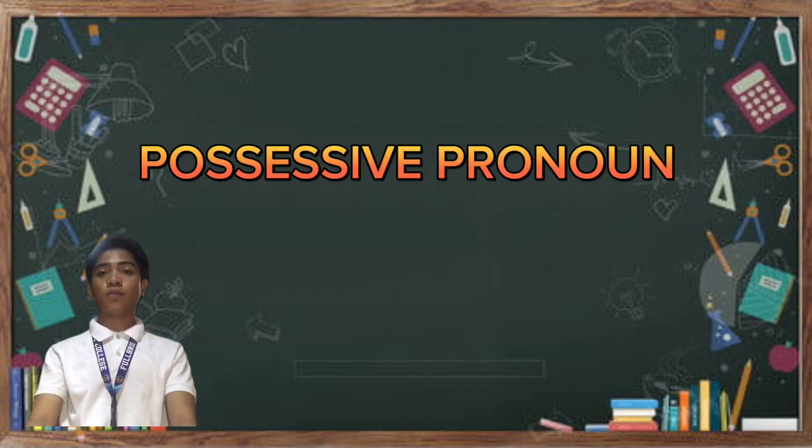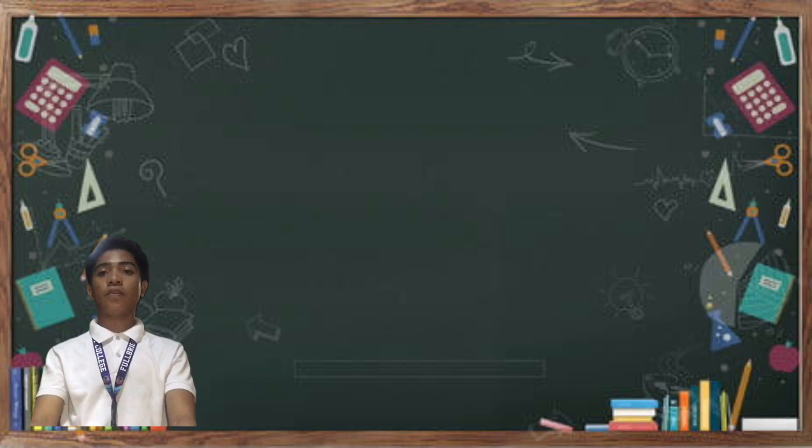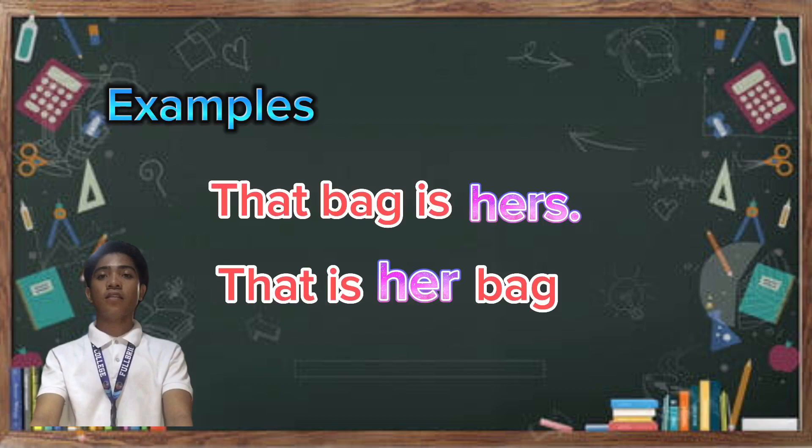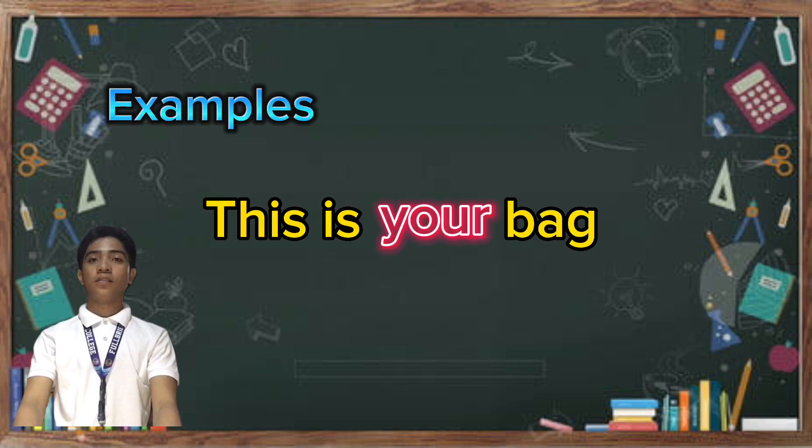For the next example, we are going to use the possessive pronoun 'her' and 'hers.' We use 'her' and 'hers' when it shows a possession of a girl or a woman. Here are the examples: 'That bag is hers.' and 'That is her bag.'